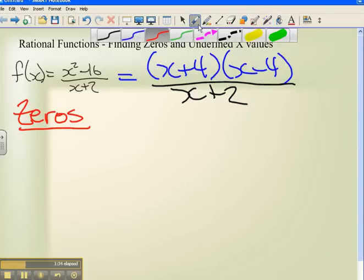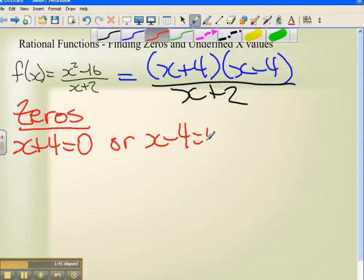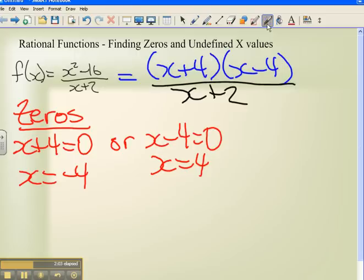So our first one, let's start with x plus 4 equals zero, or the second one, x minus 4 equals zero. So it looks like we're going to have two zeros. This one, first one here, subtract 4 from both sides, we are left with x equals negative 4. The second one, we want to add 4 to both sides, x equals plus 4. So we have zeros at x equals minus 4 and x equals positive 4.